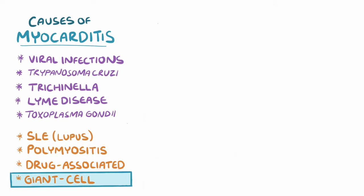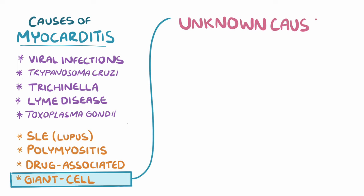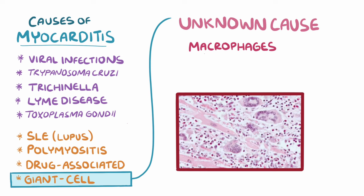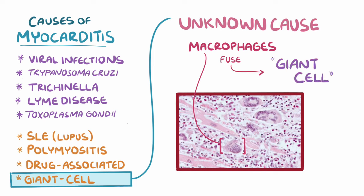Finally, there's giant-cell myocarditis, which causes inflammation in the heart from an unknown cause. The key finding here is that macrophages, the immune cells that engulf foreign substances, start to fuse together to form a single giant cell, hence the name.